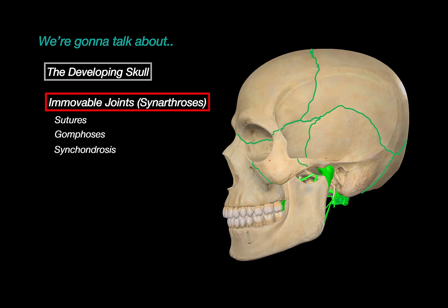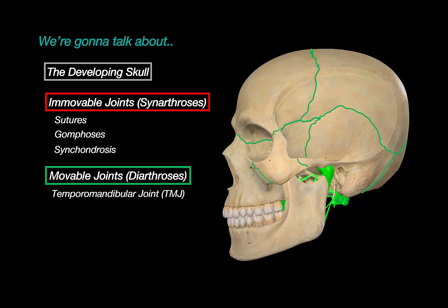The immovable joints, or synarthrosis, including sutures, synchondrosis, and gomphosis. And one movable joint, the temporomandibular joints. We will cover each of these, and put in a few clinical notes along the way to make it interesting.